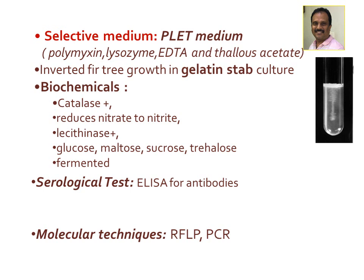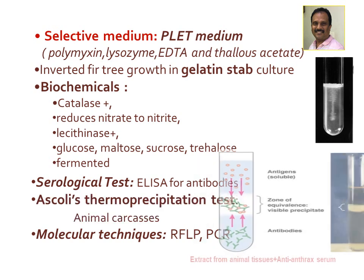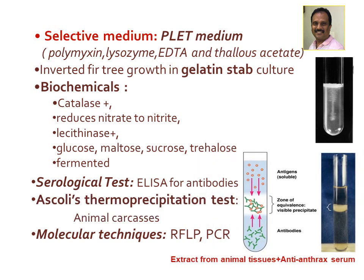Biochemically, Bacillus anthracis is catalase positive, reduces nitrate to nitrite, and lecithinase production is positive. Glucose, maltose, sucrose, and related sugars are all fermented. The most important serological test is antibody detection by ELISA. From animal carcasses, the Ascoli thermoprecipitin test can be performed by extracting antigens from infected animal tissue and mixing with anthrax anti-sera in a test tube.